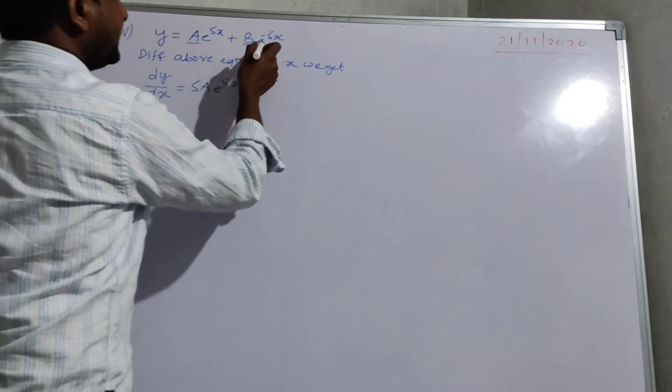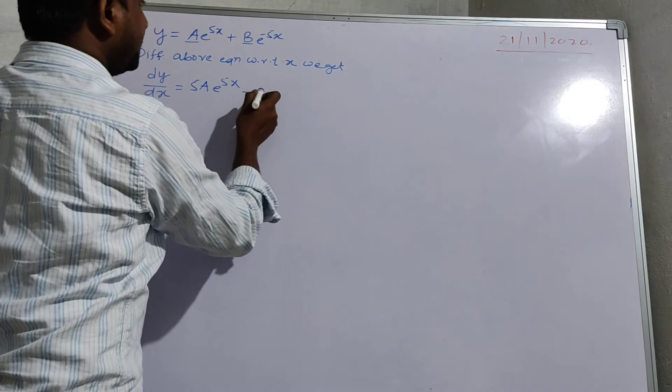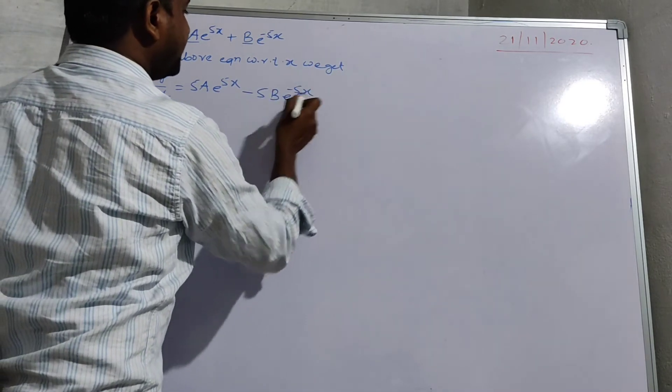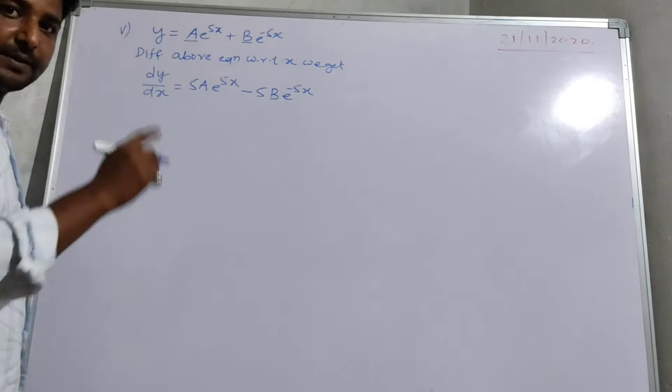When we differentiate here, e to the power minus 5, you will get minus 5b e to the power minus 5x. This is one time differentiate.